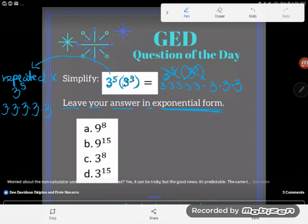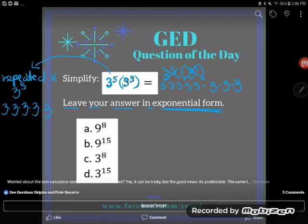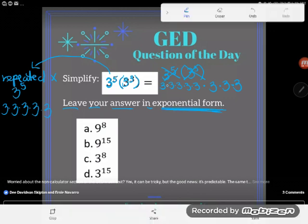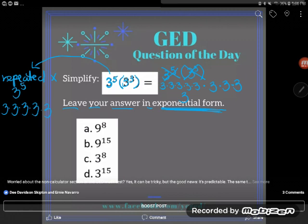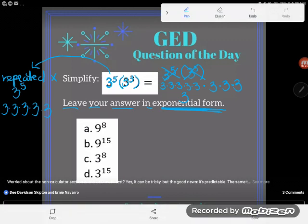Now notice how I want my answers here. I want my answers written in exponential form. So I want to talk about this repeated multiplication that's happening using an exponent. So what number do I see multiplying here? Well obviously it's still 3 multiplying. It's a bunch of 3s. But how many 3s do I have?